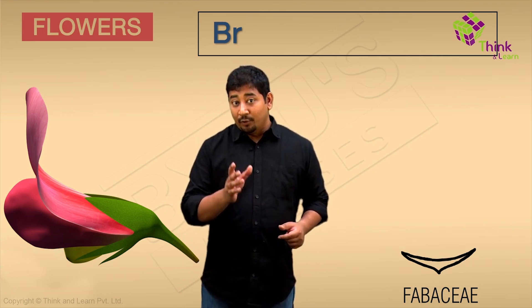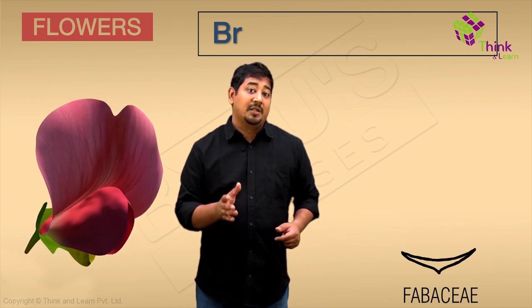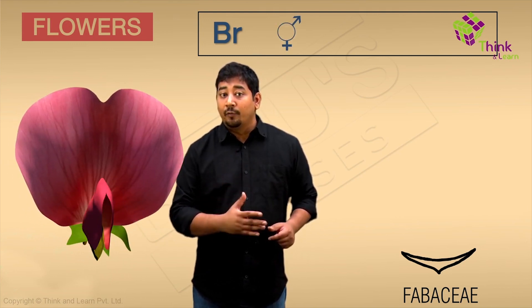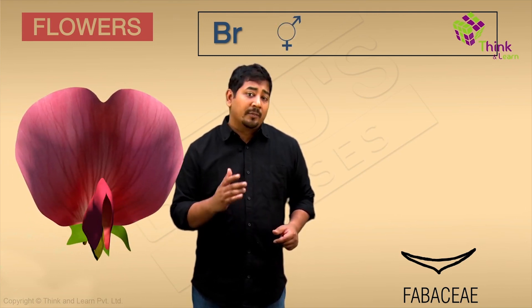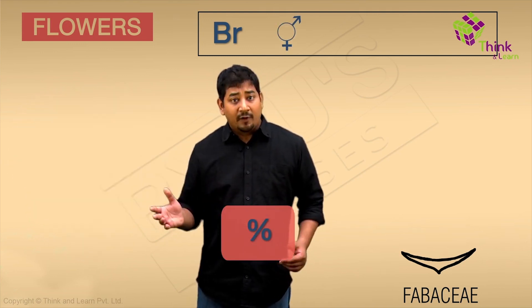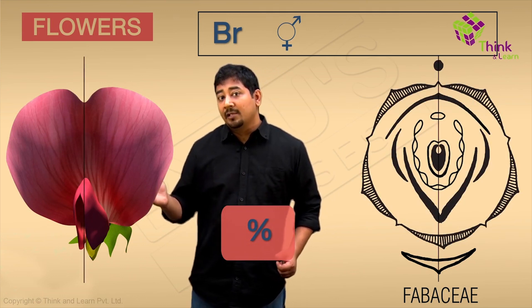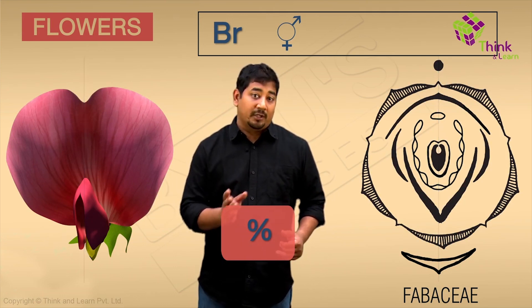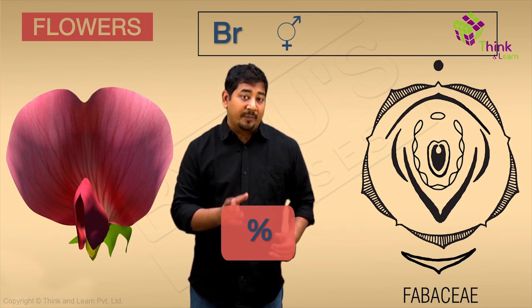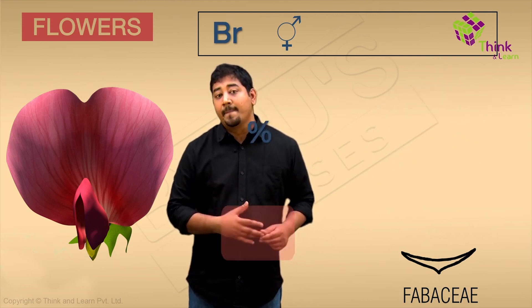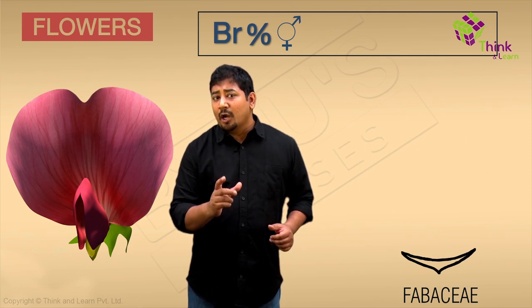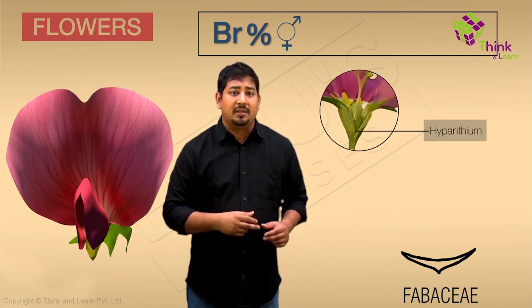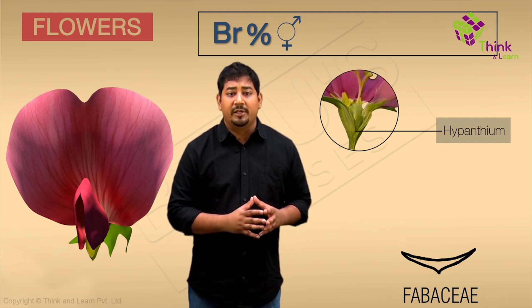Both male and female organs are present in a typical flower, that is they are bisexual and they have all the four whorls, that is they are complete. In a typical flower, you will also notice bilateral symmetry, therefore it is zygomorphic, and so you represent this by this particular symbol. They generally have a short cup-shaped feature called a hypanthium, that is a characteristic of this family.